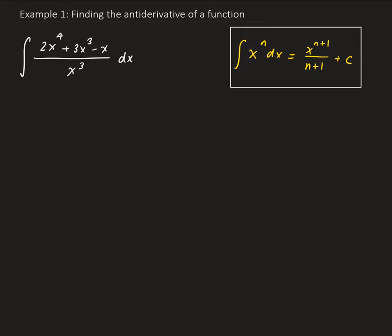So the first thing to do is rewrite this algebraically. We're going to have the integral of 2x to the 4th over x cubed plus 3x cubed over x cubed minus x over x cubed, dx.